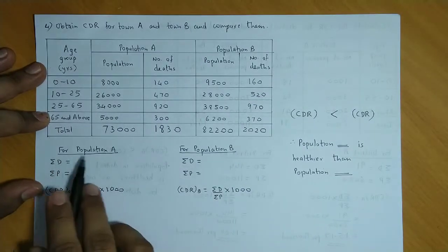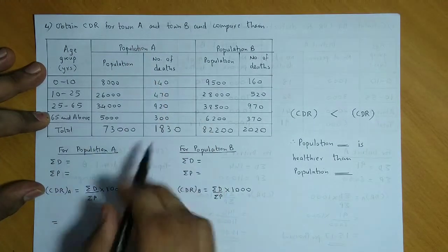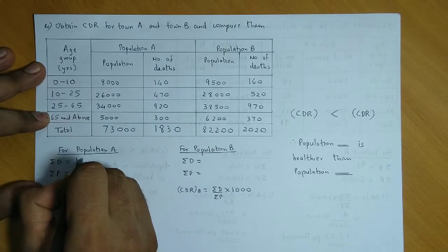Now we have entry here. For population A, total deaths. In population A, total deaths is 1,830.